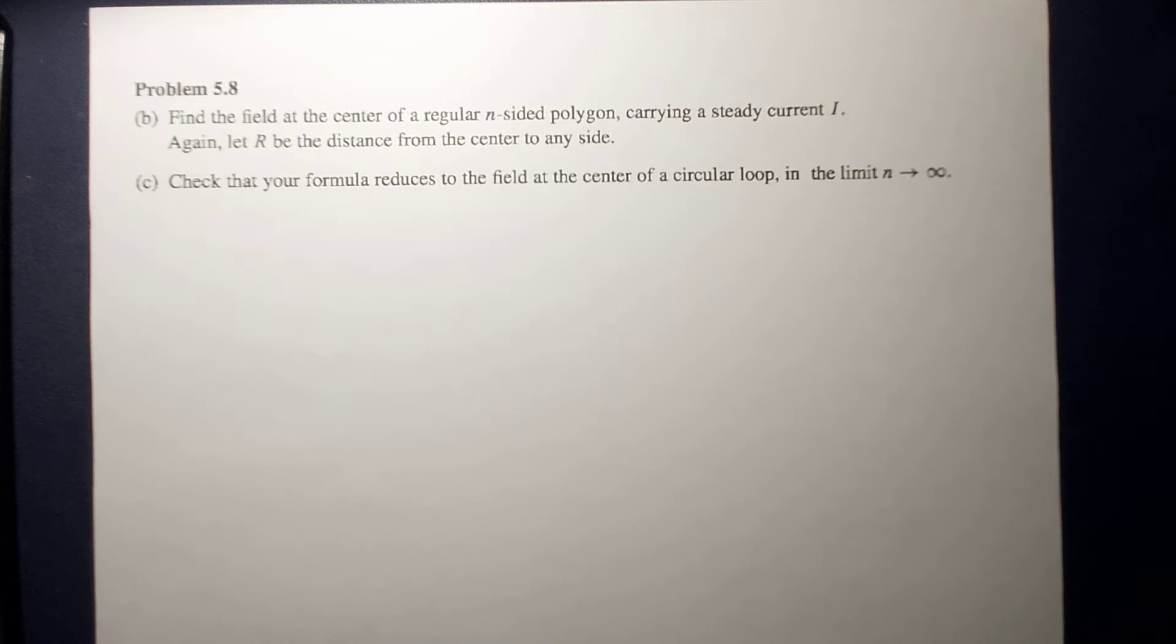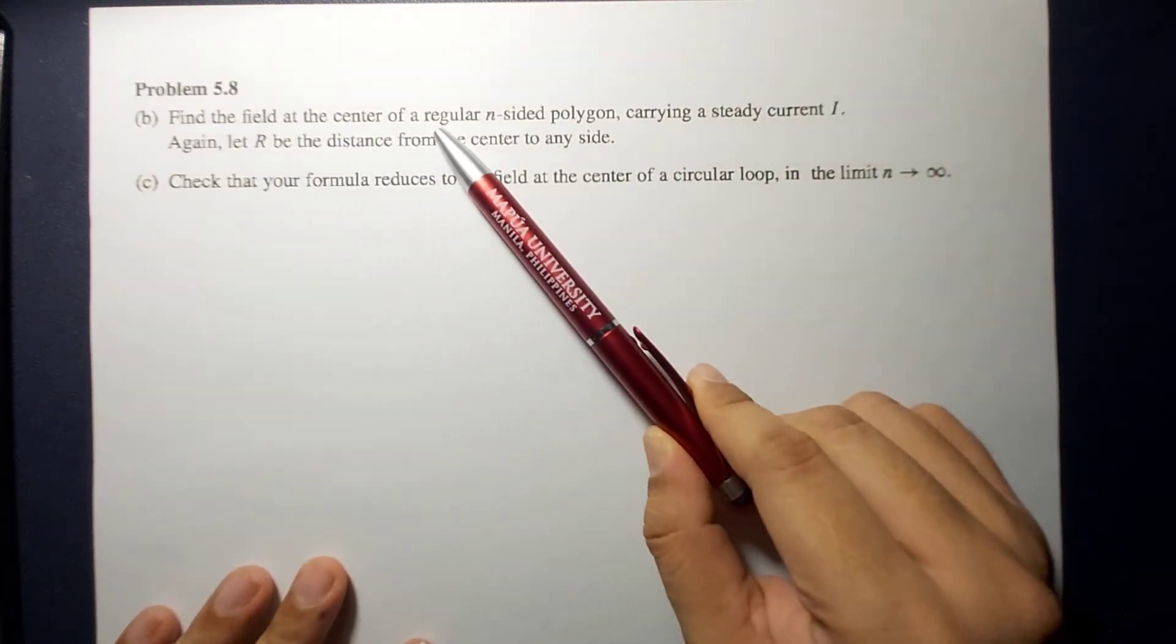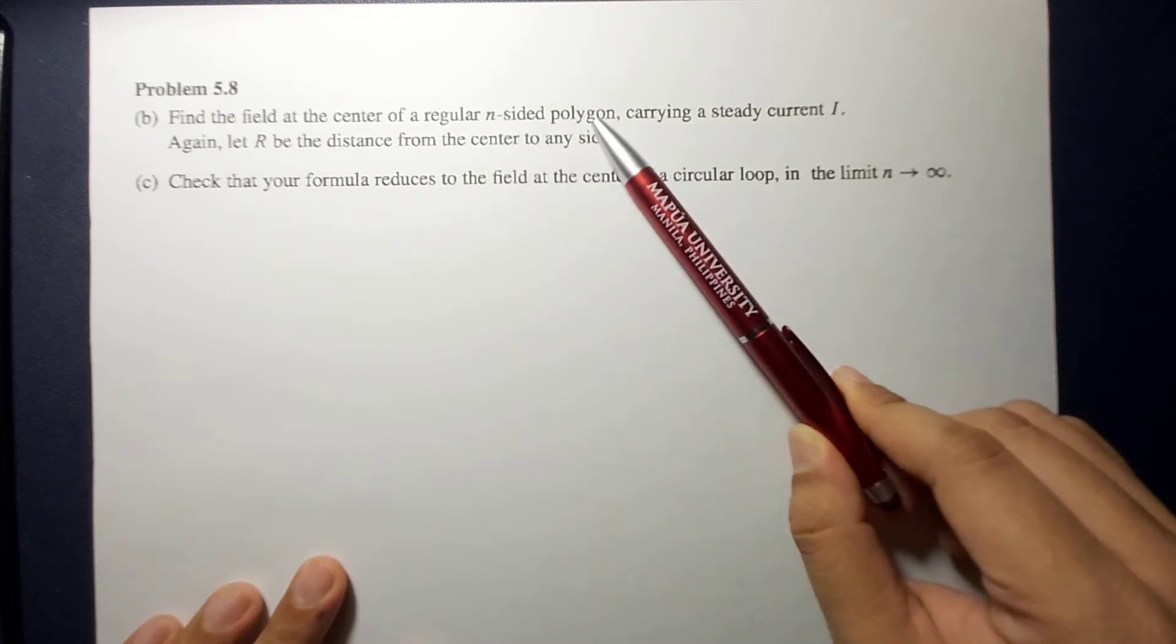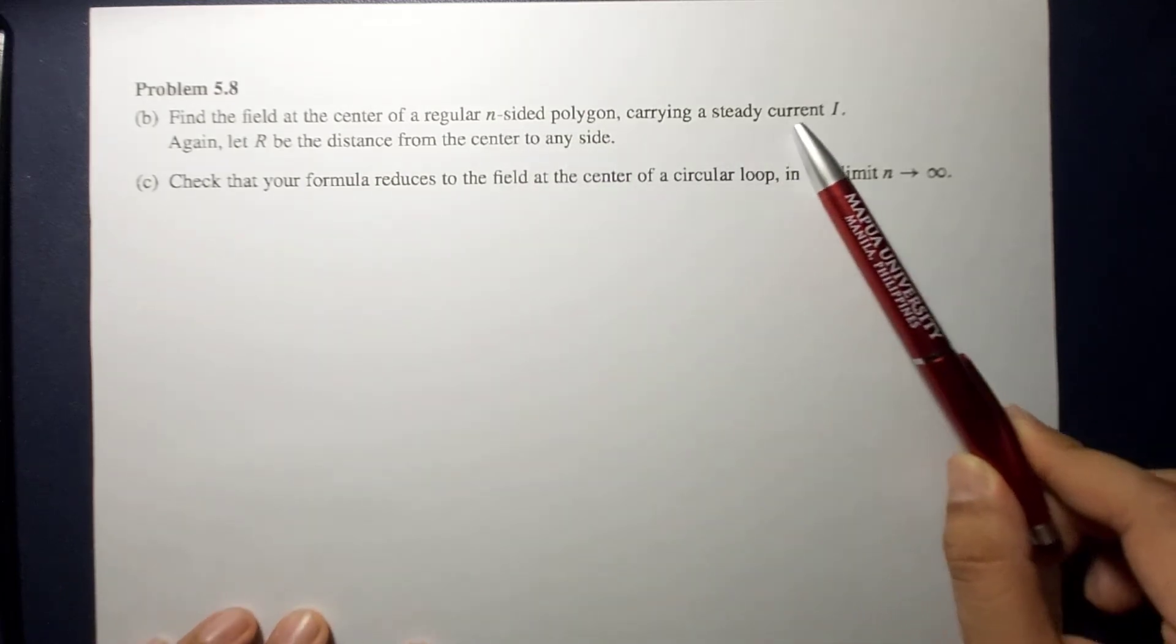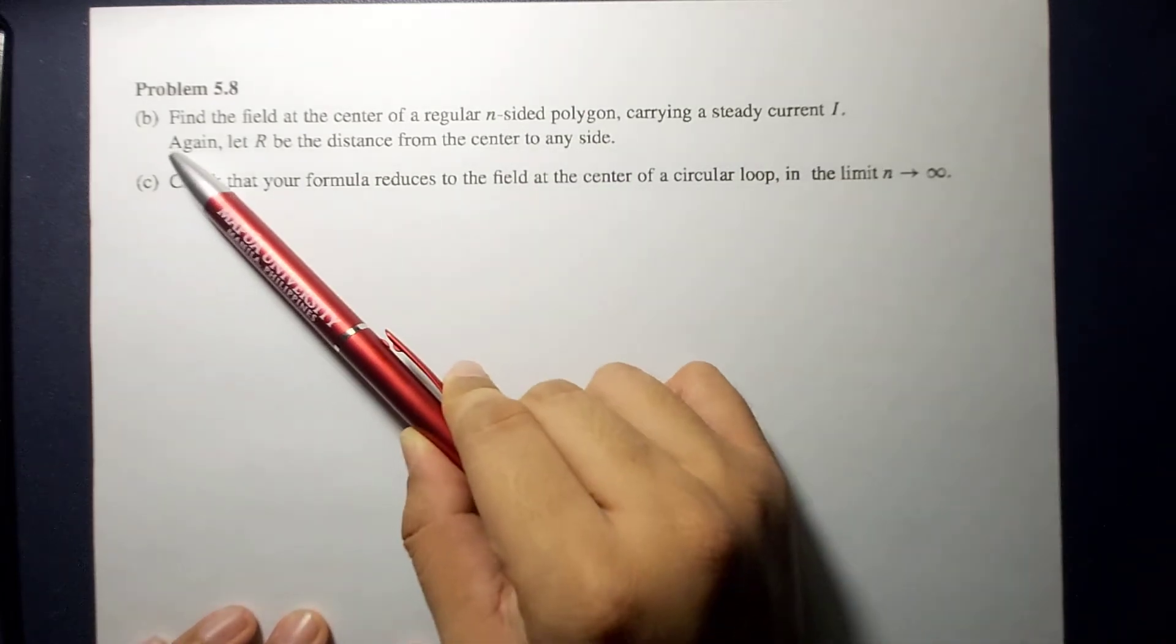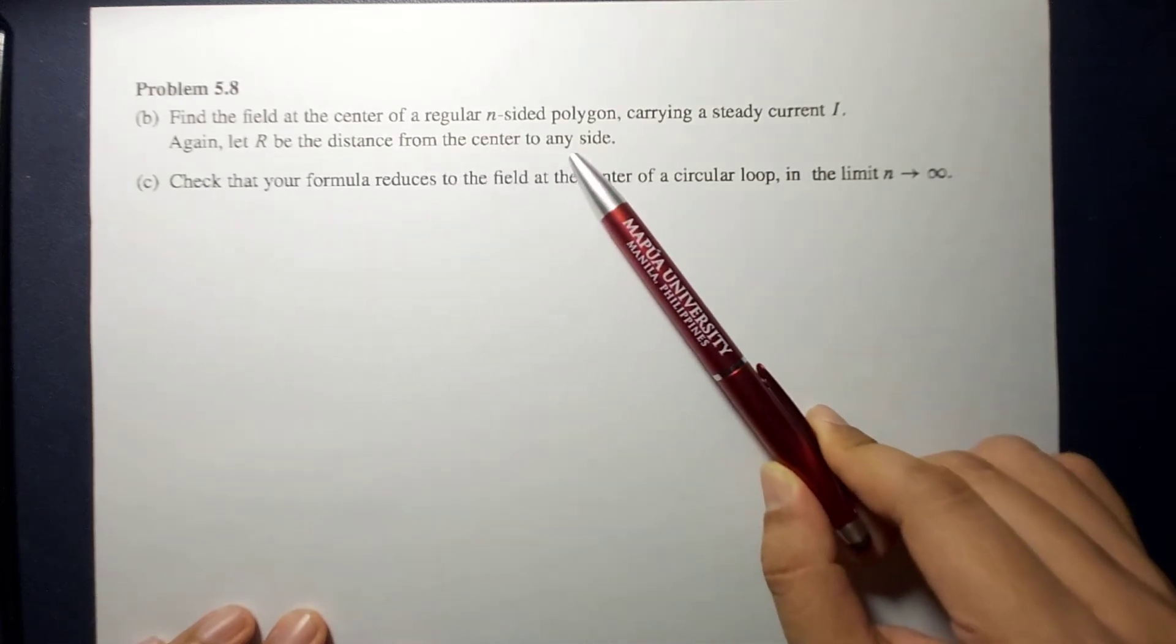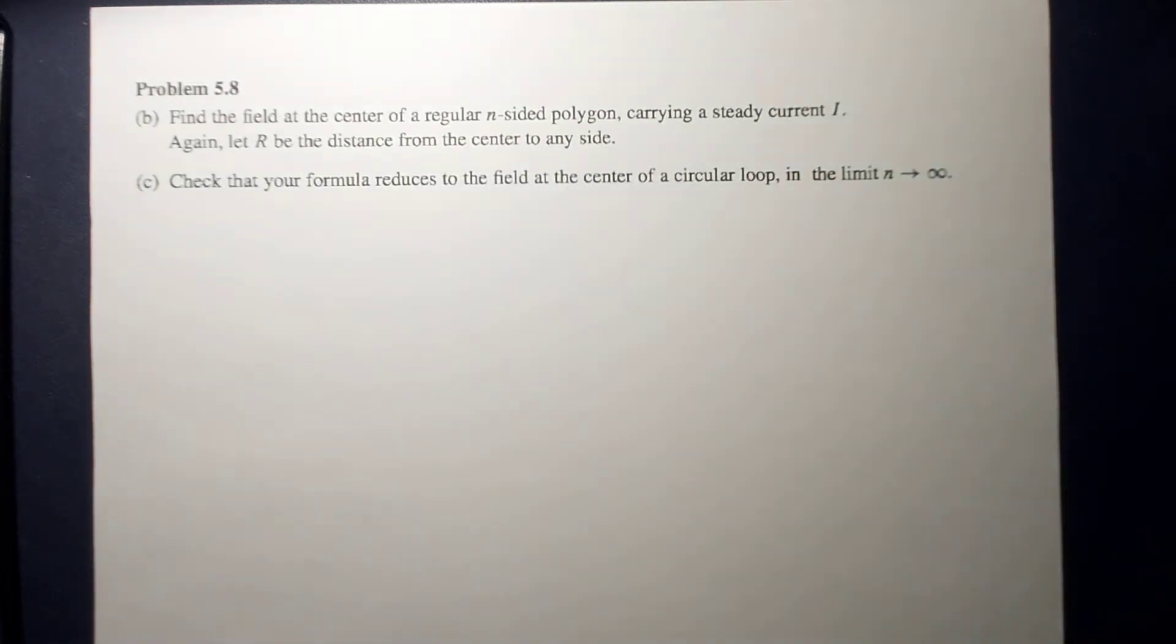The problem reads: Find the field at the center of a regular N-sided polygon carrying a steady current I. Again, let R be the distance from the center to any side. Now in order to do this, let's say we have a hexagon.